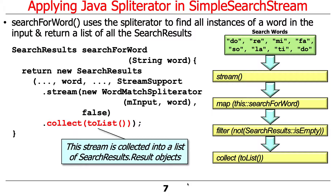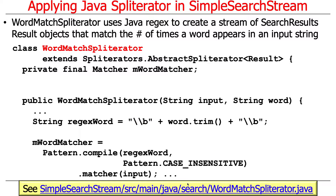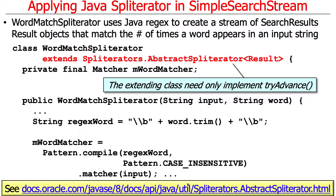At a high level, that list keeps track of all the indices where matches were actually found. The WordMatchSpliterator class extends the Spliterators.AbstractSpliterator class, which fills in some of the details of a spliterator to make implementation easier — you only have to implement a few of the methods, not all of them. There are a bunch of methods defined in the spliterator interface that have canonical implementations through the abstract spliterator class. WordMatchSpliterator uses a Java regular expression to create a stream of search result objects that track the number of times a word appears in an input string.